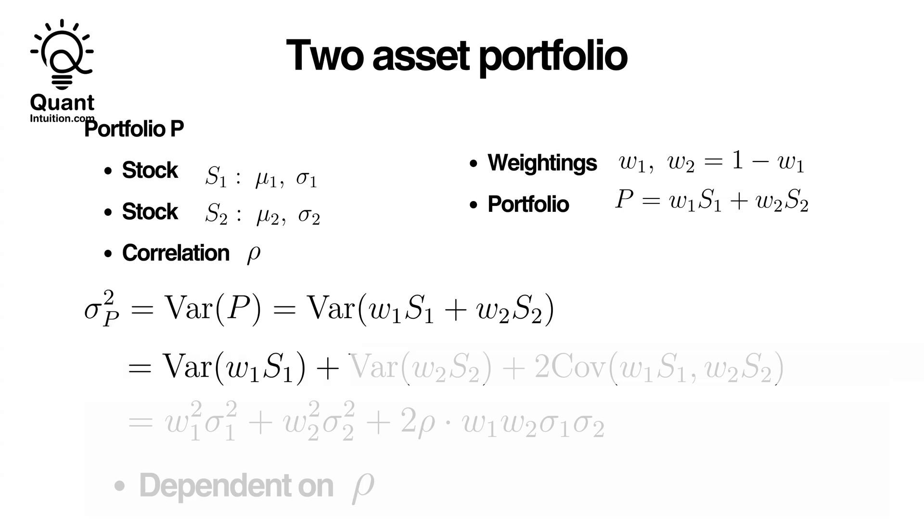Using the binomial formula for variances, the variance can be expressed as the sum of the variance of the two parts. So, W1 times S1 and W2 times S2. Additionally, we can include the term for two times the covariance of the two assets.